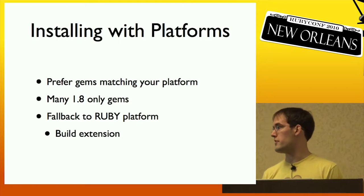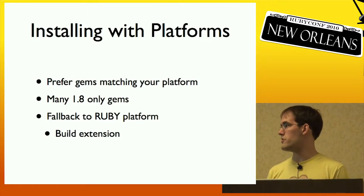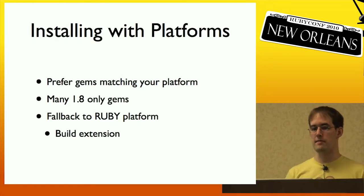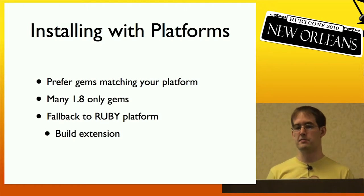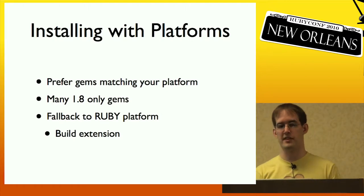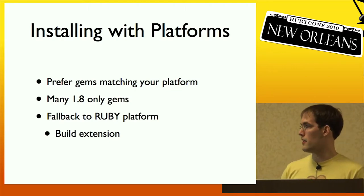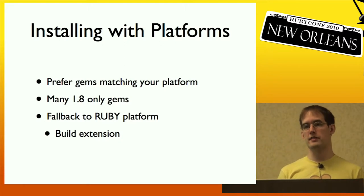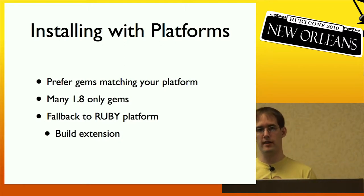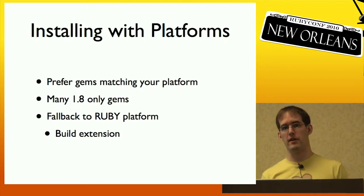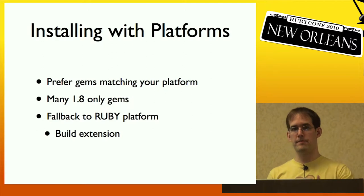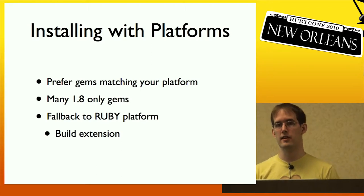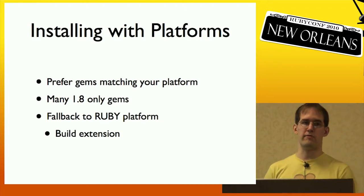Platforms is still not a perfect solution. RubyGems prefers gems matching the platform, but many existing platform gems are 1.8 only. So if you try to use them on 1.9, the gem just installs but doesn't actually work. The other problem is RubyGems will fall back to the Ruby platform, which may involve building an extension. This is a problem when the person who builds the platform gem is different from the main author — if the main version is updated, it hides all the platform versions until new releases are made, for example for Windows.